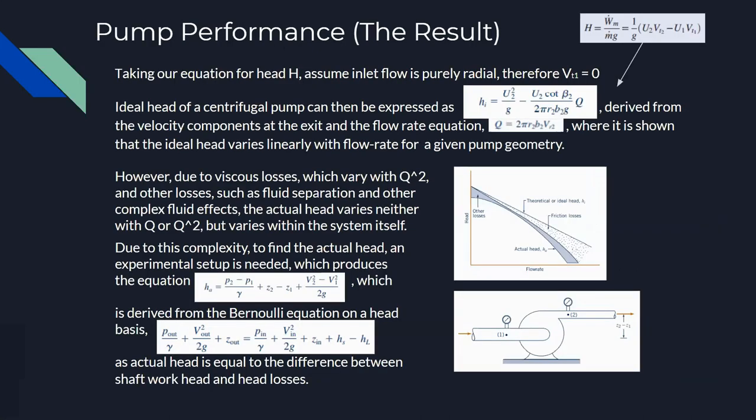To find pump performance, we must first find the ideal head of the pump, which shows a linear relationship with flow rate for ideal head. This is because as flow rate increases, tangential velocity decreases, reducing the work done on the fluid and thereby decreasing head rise. However, actual head differs from ideal head due to head losses.